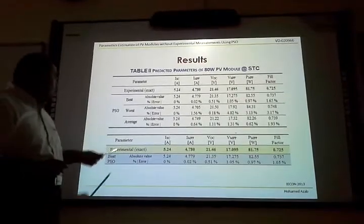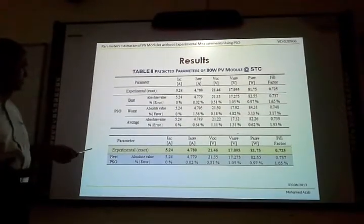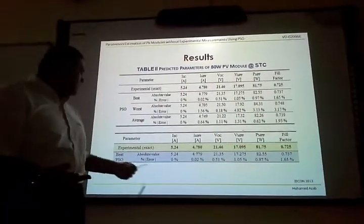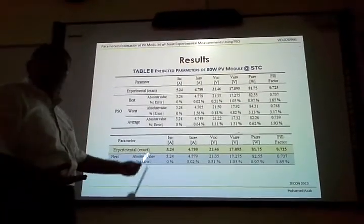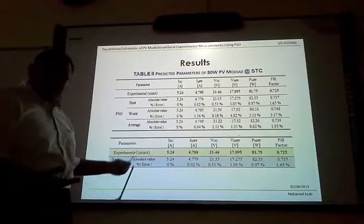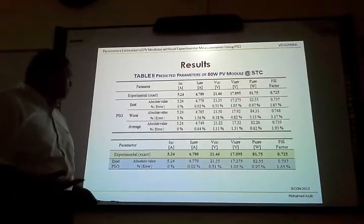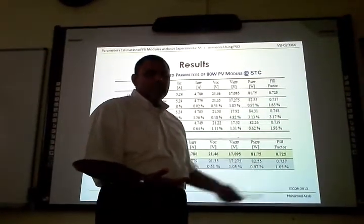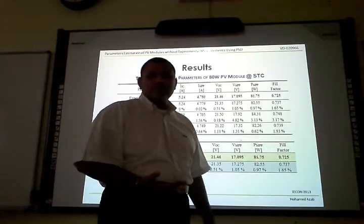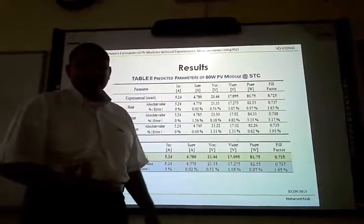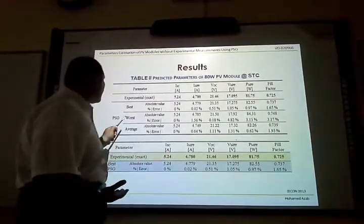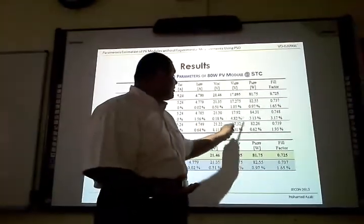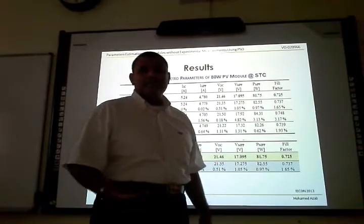Regarding the relation or a quick comparison between exact values and the best obtained values, we can observe that the absolute value of the percentage error didn't exceed 1.7 percent, which means that Particle Swarm Optimization is successful to estimate the PV parameters. While in the case of worst-case estimation, the error didn't exceed 5 percent, which also is satisfactory.